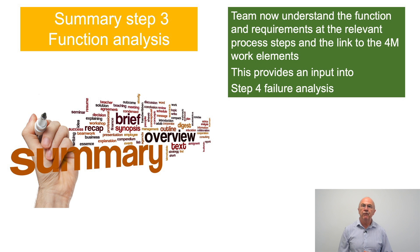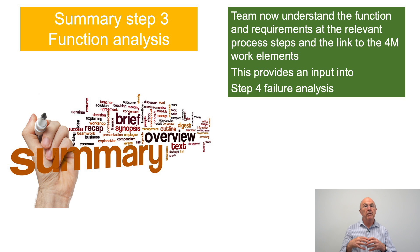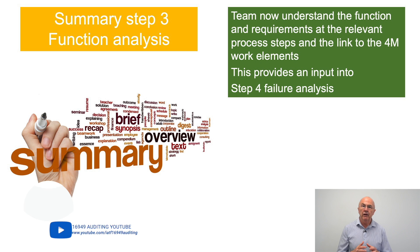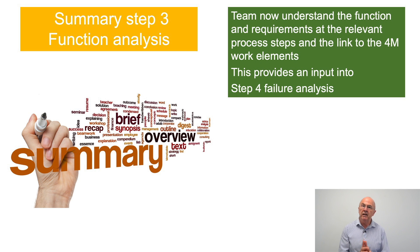To summarize step three, function analysis: the team has had a detailed discussion on the function of the overall saleable product, the function of the process step, and then broken it down to the functions of individual work elements within the process step. Within steps two and three we are going into far more detail than we would have done using the AIAG fourth edition manual or other reference manuals. This is one of the fundamental differences in the new seven-step approach — we need to do a lot more upfront planning about what we're trying to achieve before going into any detailed risk analysis.